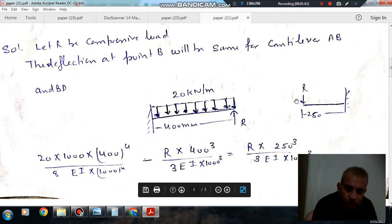It will be deflection at the end point and this is your R into 250 cube by, and deflection at C is your R into 250 cube by 3EI.